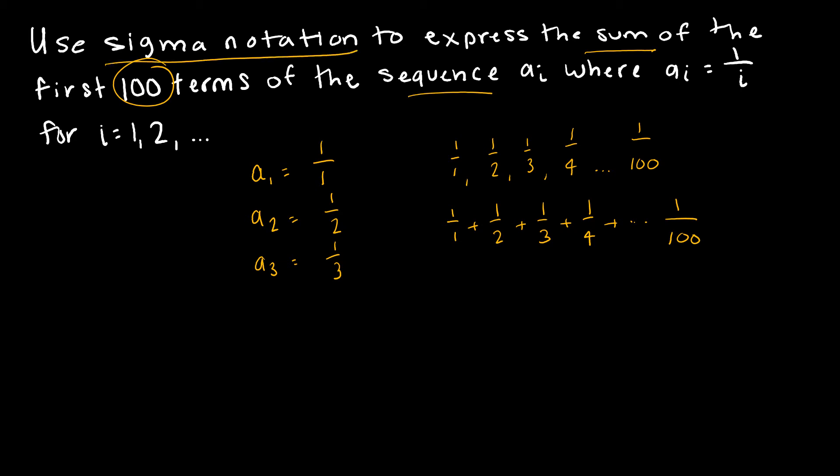But I want to do that in sigma notation, so I want to take this and instead write it as sigma notation. In sigma notation, of course we would use sigma, and then below we would say i is equal to 1, because that's the starting point, and goes all the way up to our upper limit of 100. So we're starting at 1 and going to 100, and how are we defining those terms?